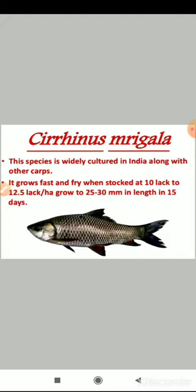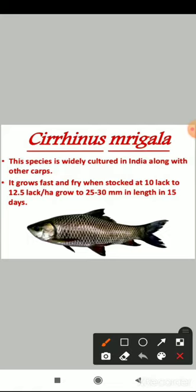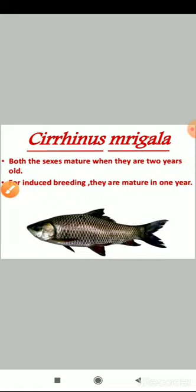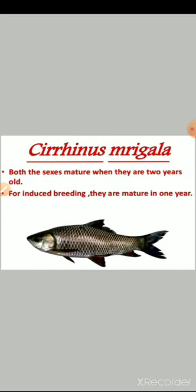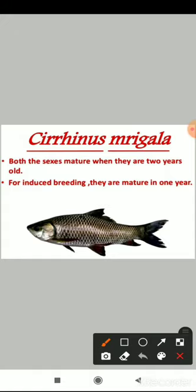Cirhinus mrigala is widely cultured in India along with other carps. It grows fast — fry stocked at 10 to 12.5 lakhs per hectare grow to 25 to 30 mm in length in 15 days. Both species mature when 2 years old, but for induced breeding they are matured in 1 year. Induced breeding involves using pituitary gland extract hormones to stimulate early maturity and spawning in fishes.